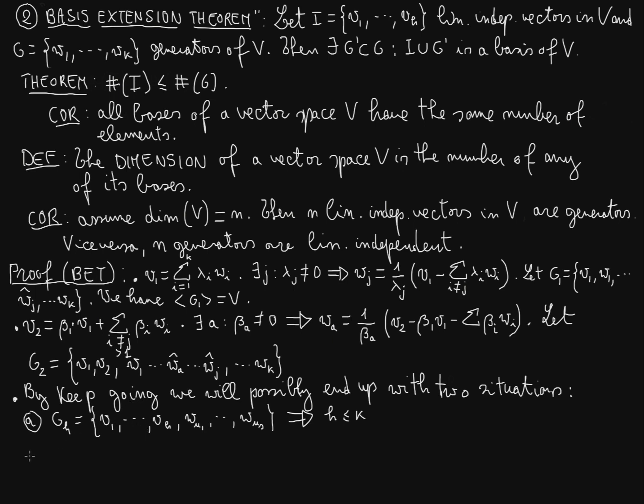The other case that a priori might happen is the following, b. So the process of adding vectors v_i will finish before we have added all the v_i's. So we will end up to some g, let's say r, of the following kind.